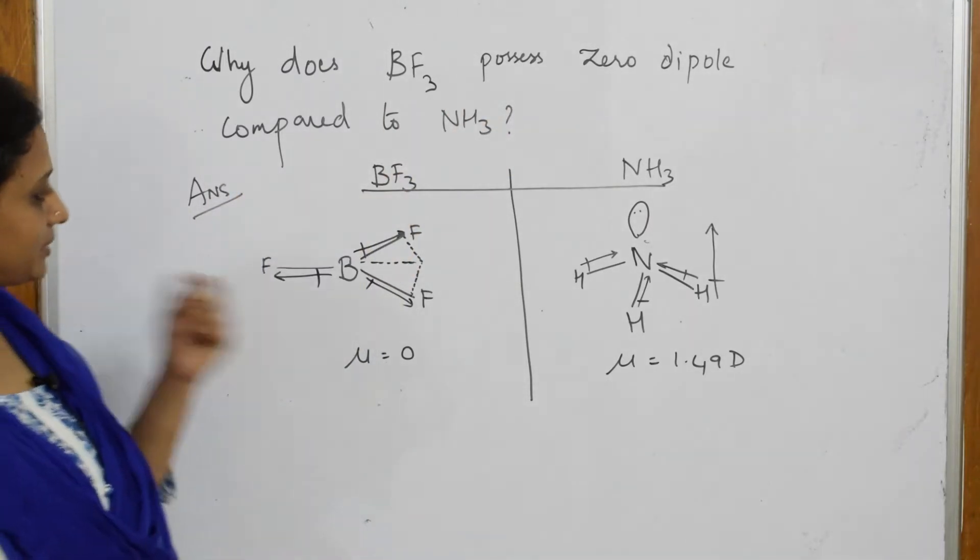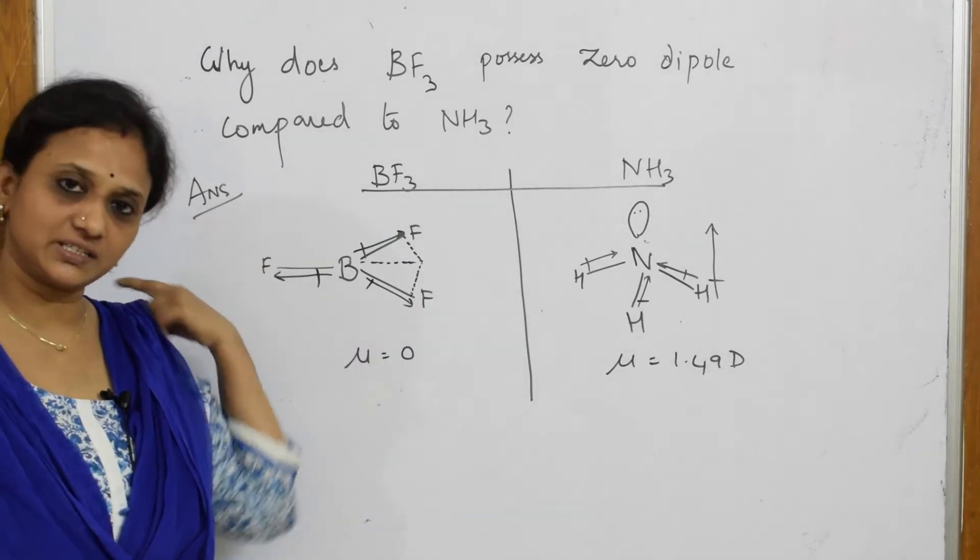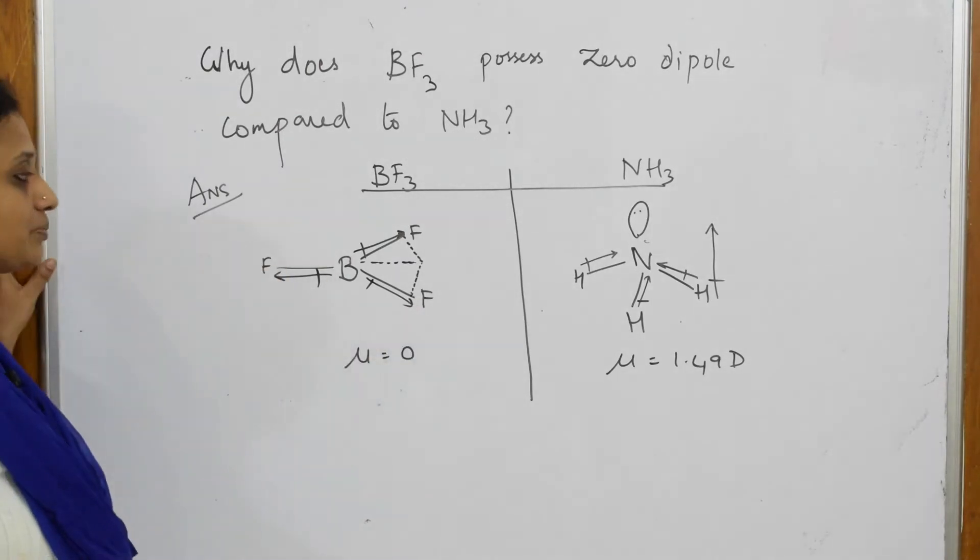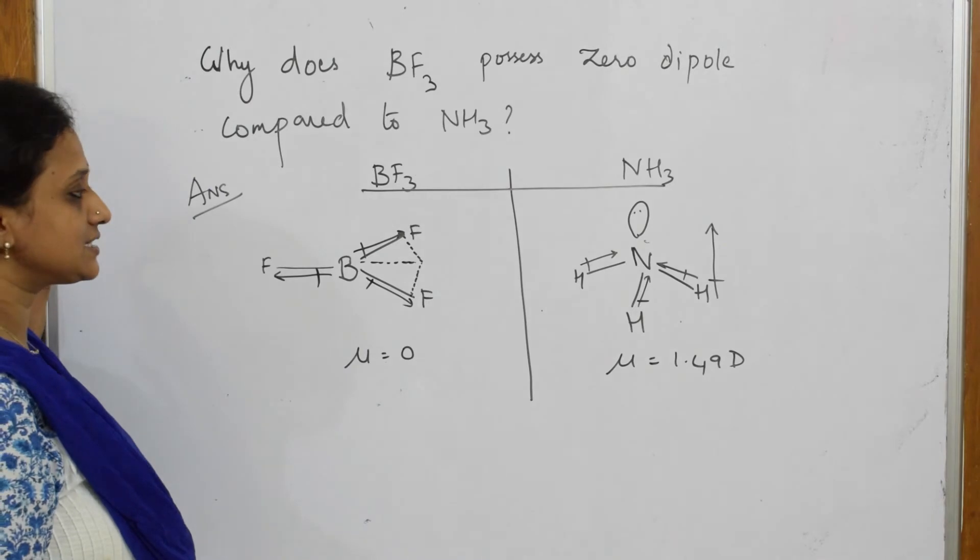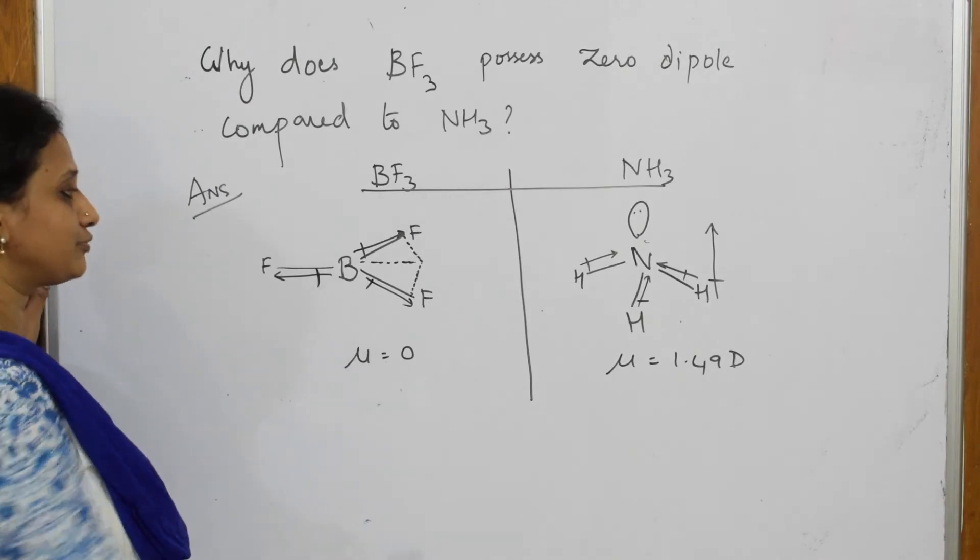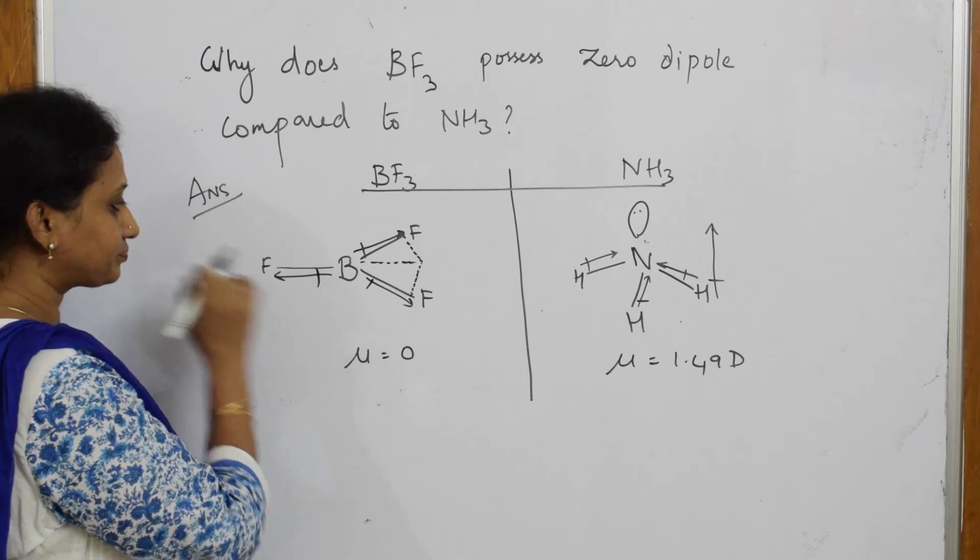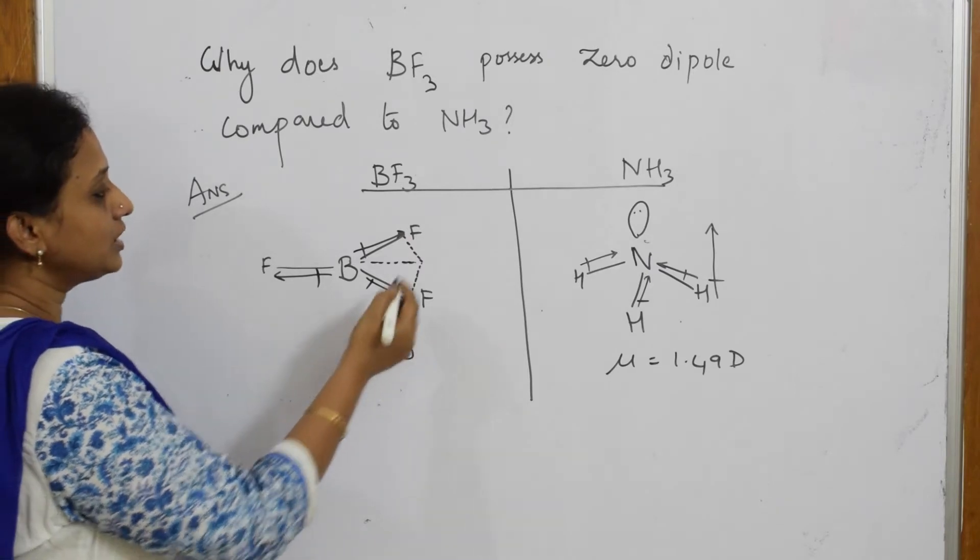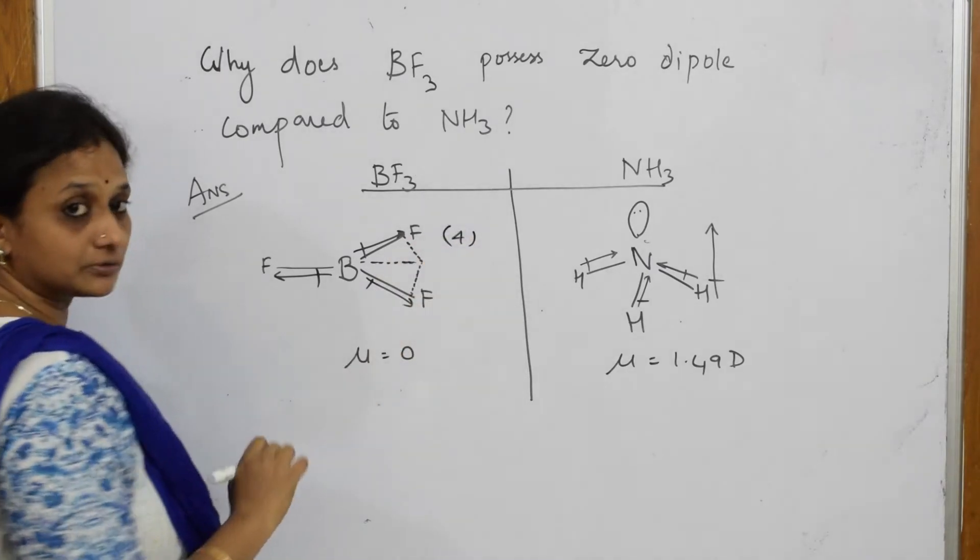So now, this is your BF3 structure, this is your ammonia structure, correct? So BF3 structure, if I speak in terms of the electronegativity, here fluorine, the electronegativity is 4, correct?